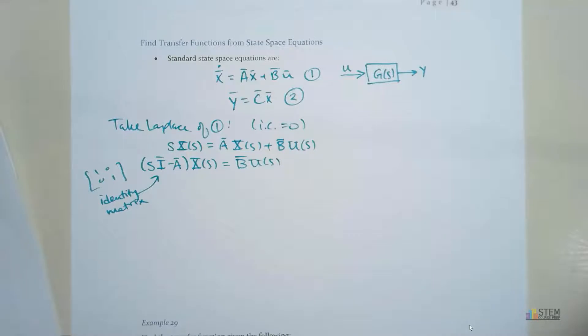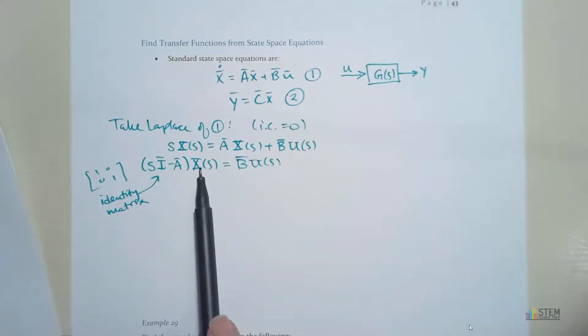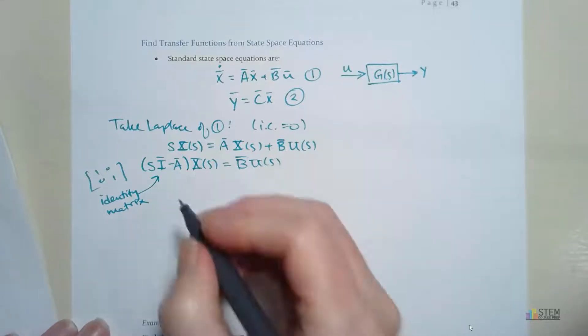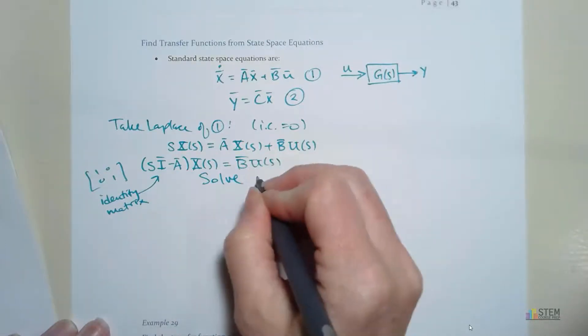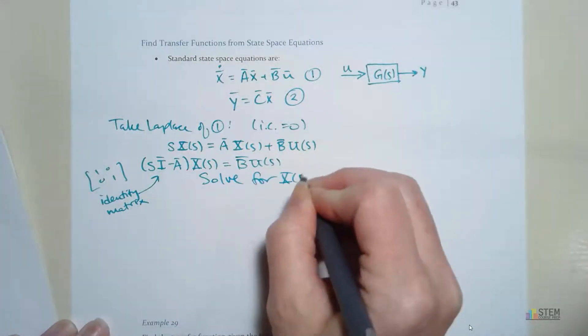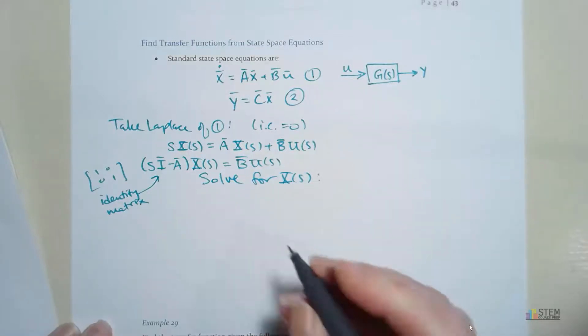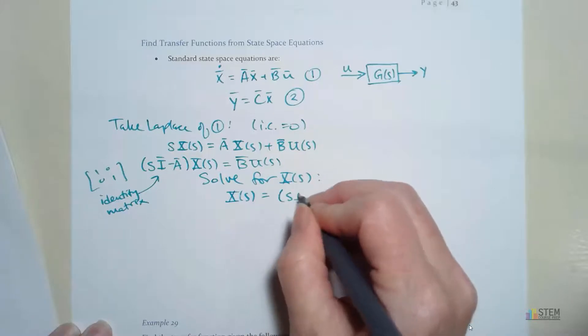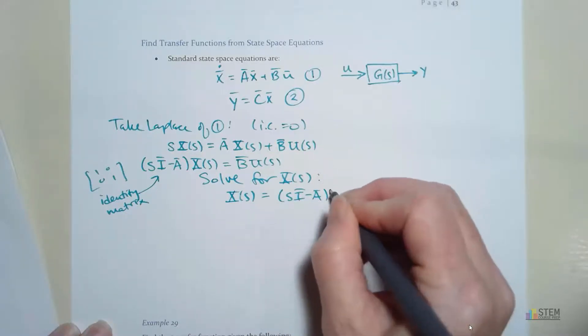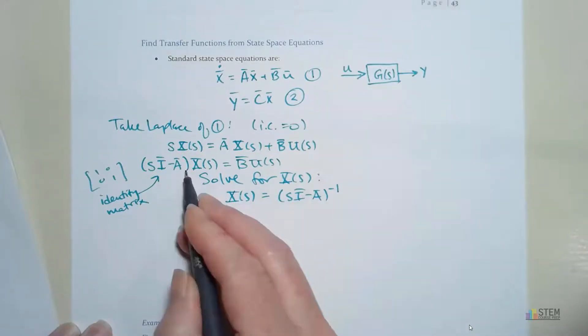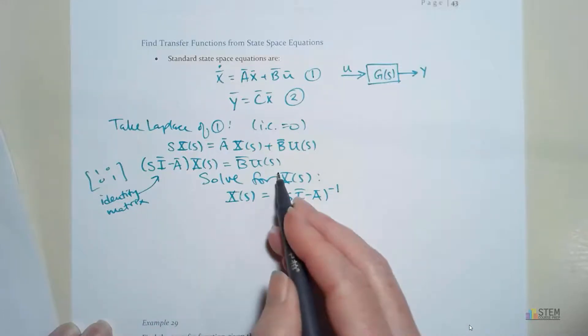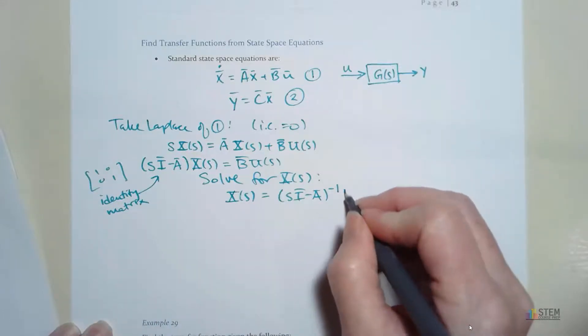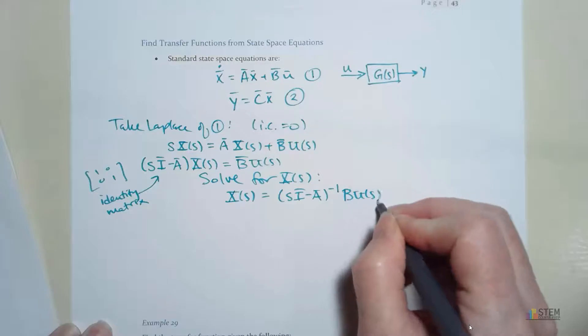So basically it's converting this S over to matrix form so that then we can subtract A. Now what I want to do here is I'm going to solve this for X and you'll see why in just a second. So let's solve for X of S and if we do that we're going to get X of S equals SI minus A. We need to do the inverse because notice this is over here. We need to basically divide through by that. And then we're going to multiply that by B times U of S.